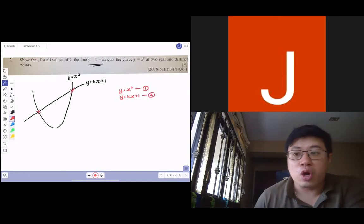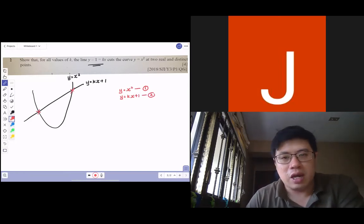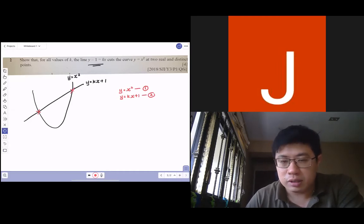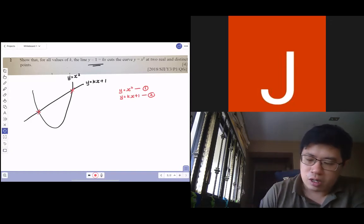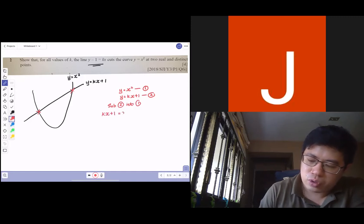After that, we will solve them simultaneously. Naturally, you can see that y lends itself as a natural substitute. If you were to substitute the second one into equation one, you will get something like this: kx plus one equals x squared.